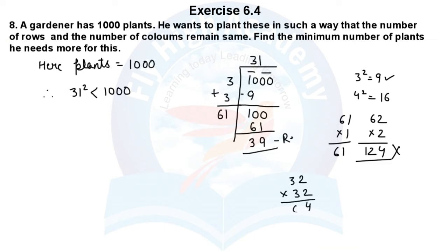So how much will 32 times 32 be? 32 times 32 equals 1024. Hence, no need to be added is 1024 minus 1000.